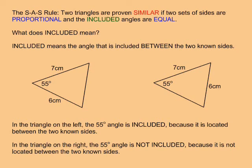In the triangle on the left, the 55 degree angle is included between the 6 cm and 7 cm sides. But in the triangle on the right, the 55 degree angle is not included between the 6 cm and 7 cm sides.